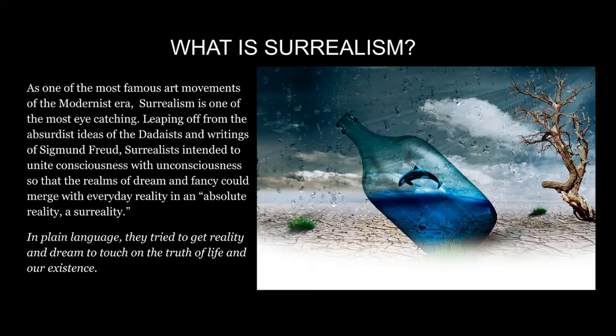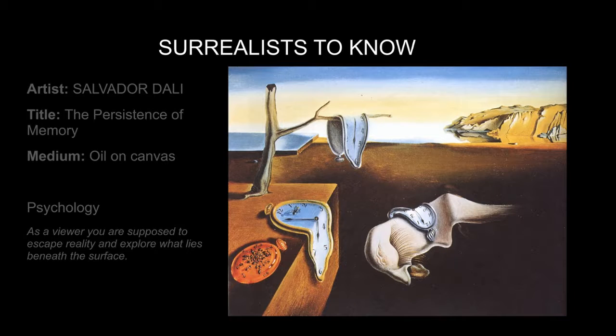Surrealism marked a period where people tried to understand the mind of a person. Though a little hard to recognize, the shape on the ground is facial skin, much like a mask.